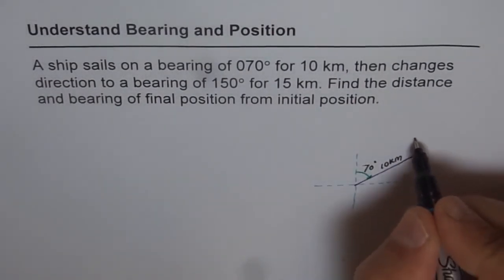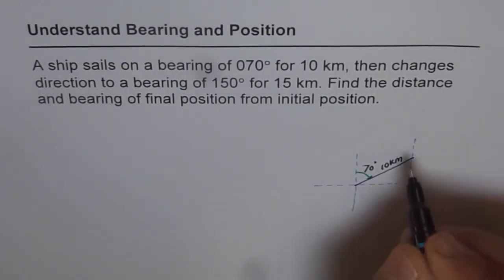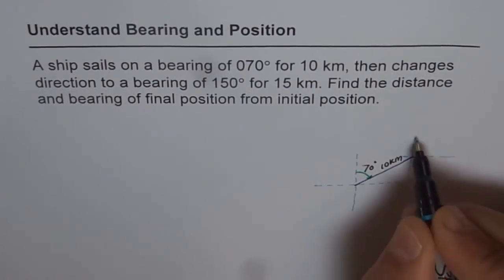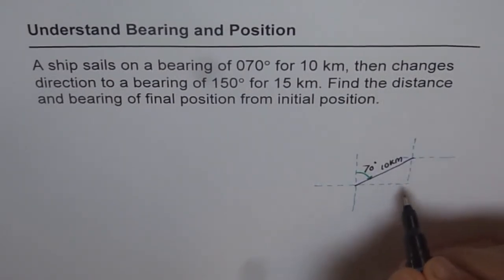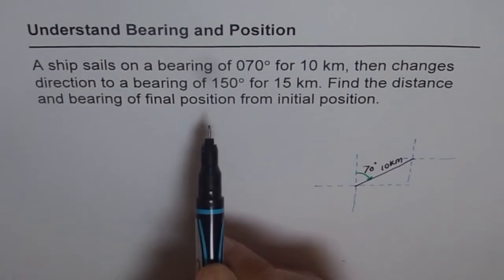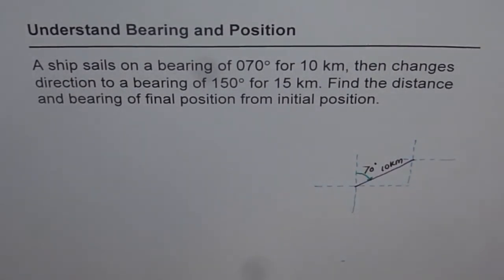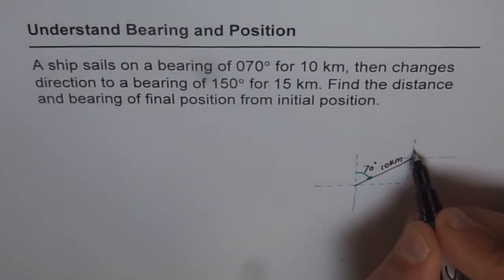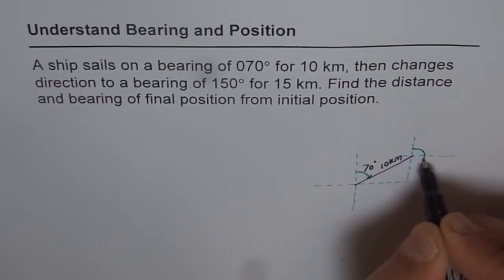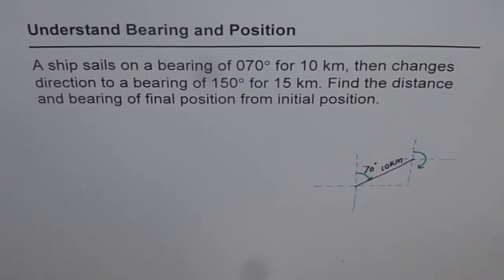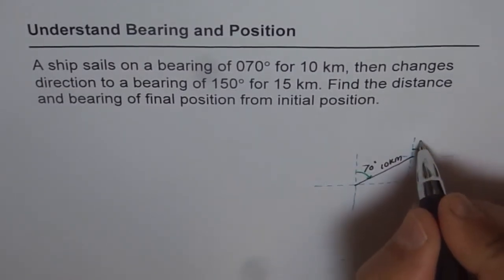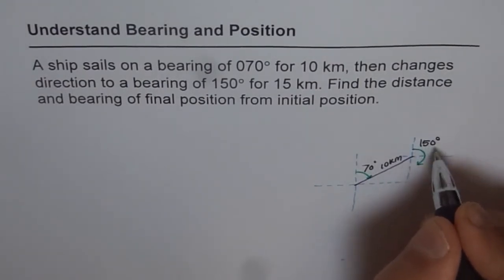So again, let us make this north-south direction here, kind of an XY axis, Y representing north. Now changes the direction to 150 degrees, that means this time again from north, the angle should be 150. So that is 90 plus 60, so more than 45. So 150 is 30 less than 180. That angle becomes 150 degrees. Let me write down 150 degrees here.